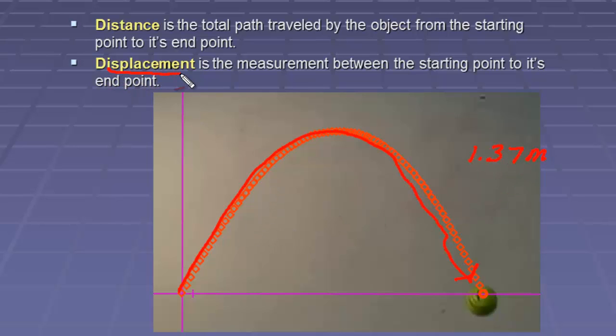The displacement. Displacement is the measurement between the starting point, right here, and the ending point, right there. That would be that .65 meters. Why are the numbers different?